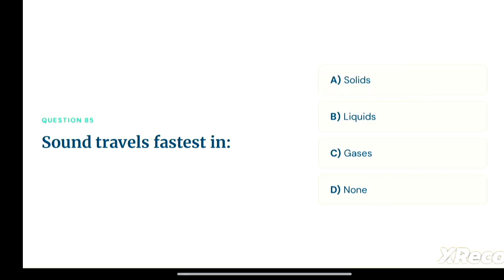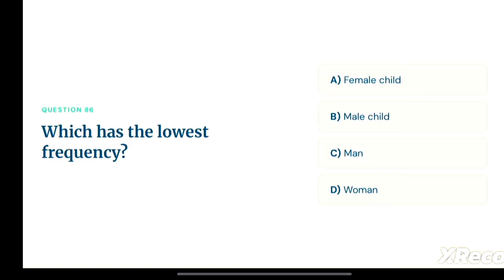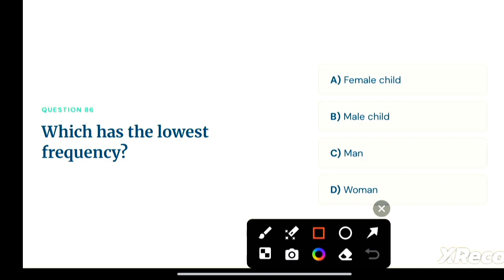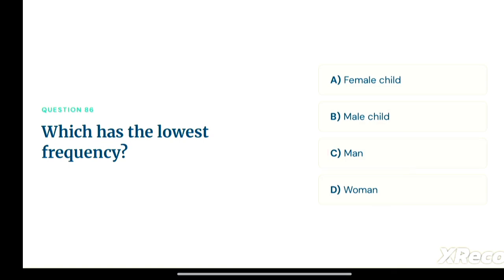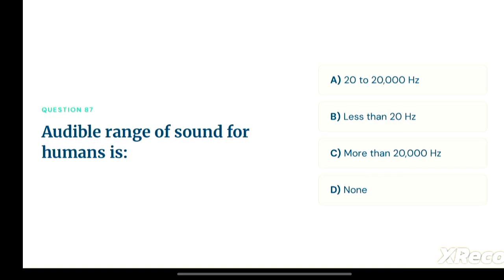Next question: which has the lowest frequency? Option A: female child, option B: male child, option C: man, option D: woman. The correct answer is option C, man. A man has the lowest frequency among the options.